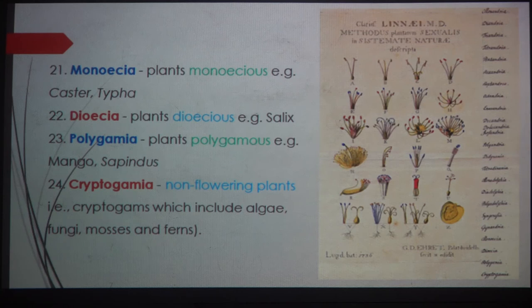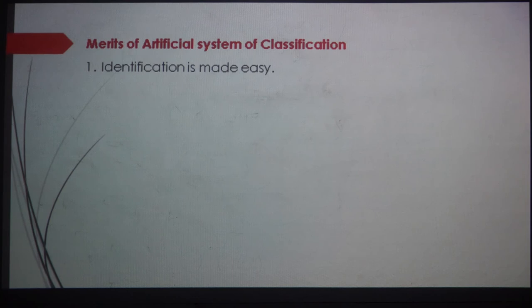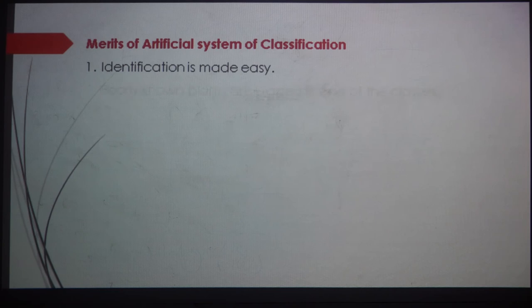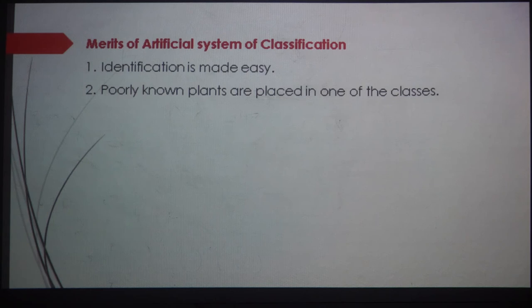Now about the merits of the artificial system, as every system has both merits and demerits. Identification is made easy because only a few characters are considered, which are easily observable and easy to remember. That is why identification becomes easy with this classification system. Also, all non-flowering plants are placed together in a single class — class twenty-four. If a specimen is not a flowering plant, it can be easily added to class twenty-four. This system still remains one of the most stable and accepted systems of classification.